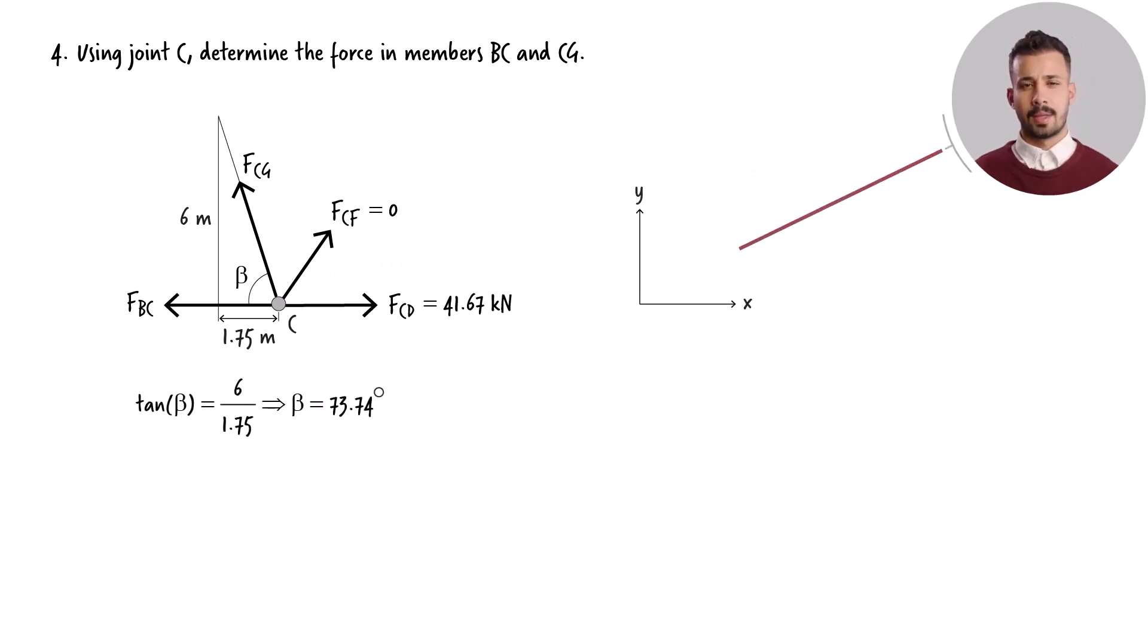The angle that member CG makes with the horizontal axis can be easily determined using the truss geometry. Using this coordinate system for the joint, the equilibrium equations can be written as. Solving them for the unknown forces, we get.